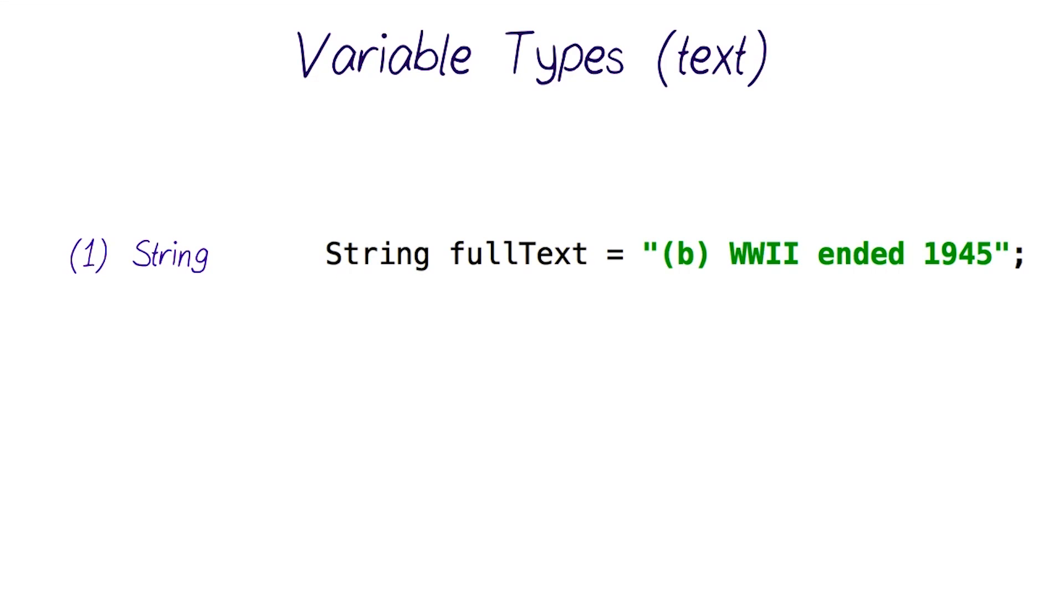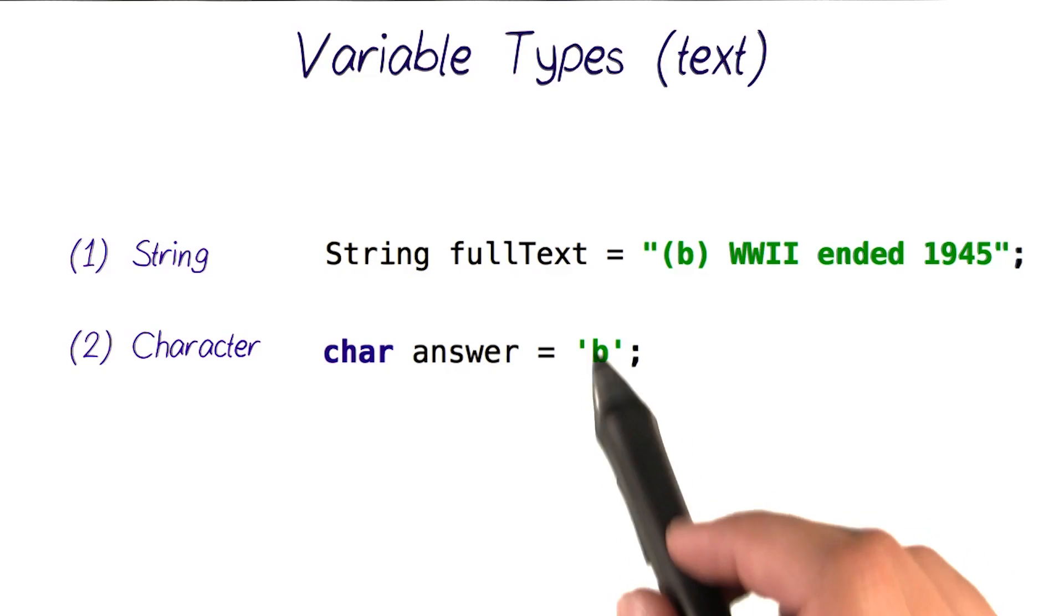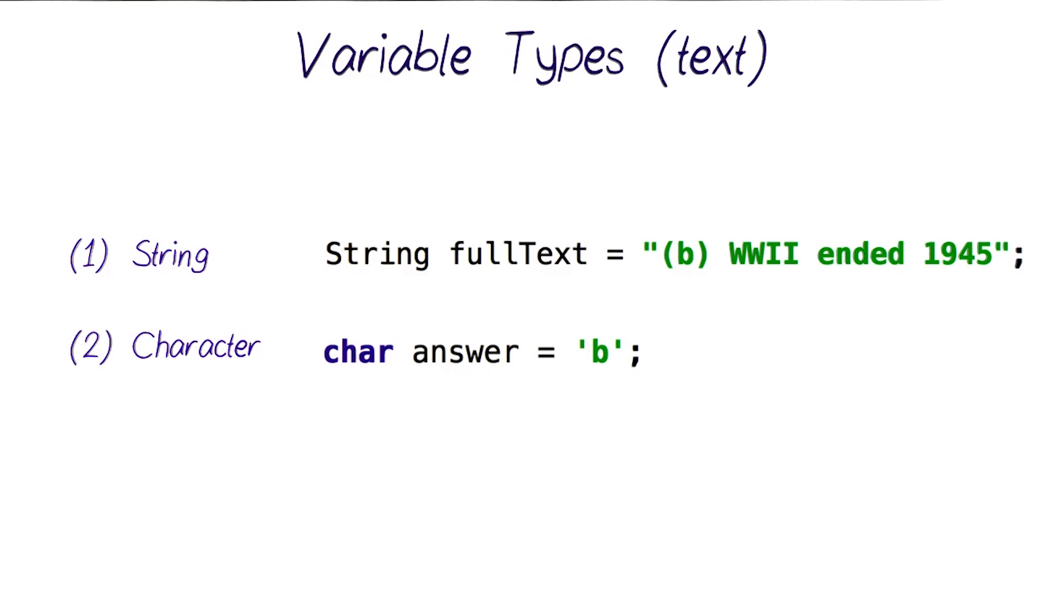Another text data type is called a character, which is shortened to char. It allows you to store just a single letter without having to store it in a string. Notice that we're using single quotes here now, instead of the double quotes with a string.